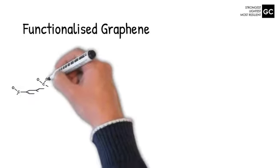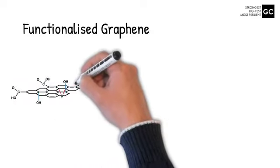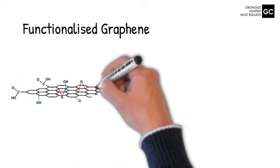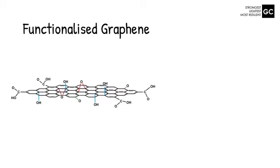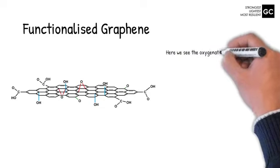There is another alternative graphene-based material, in fact the one graphene composites uses in many of its products, and that is to functionalise graphene with the suitable surface chemistry. Here we see the oxygenated form.